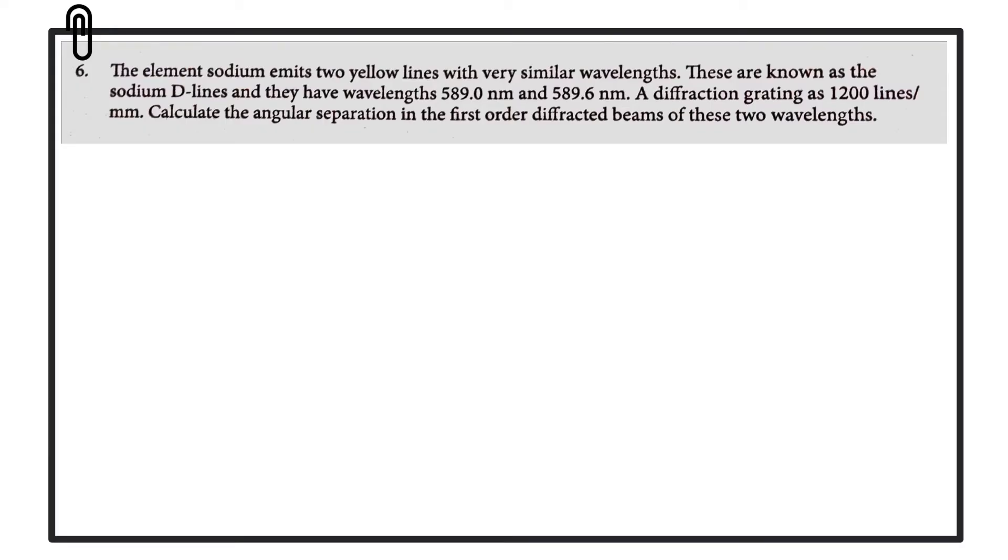Hi folks, in this video we're going to look at a question involving diffraction gratings. The element sodium emits two yellow lines with very similar wavelengths. These are known as sodium D-lines and they have wavelengths of 589.0 nanometers and 589.6 nanometers. A diffraction grating has 1200 lines per millimeter. Calculate the angular separation in the first order diffracted beams of these two wavelengths.